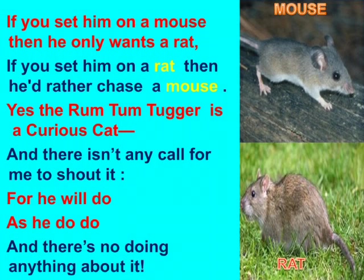The Rum Tum Tugger is a curious cat. The poet is saying he is a curious cat, and there is no use of saying anything to him. There is absolutely nothing that anyone can do about this. The Rum Tum Tugger is just that kind of cat, and he will never be happy with what he has. There is nothing you can do about it. It is very difficult to change him. He will do as he wants to do.